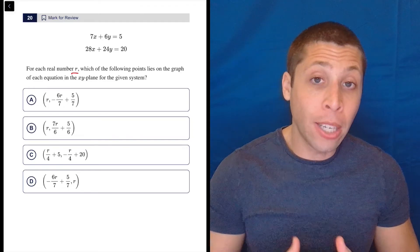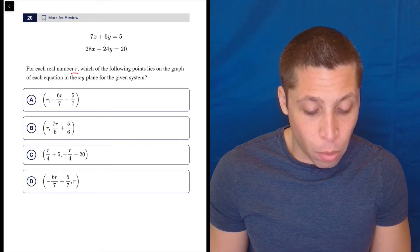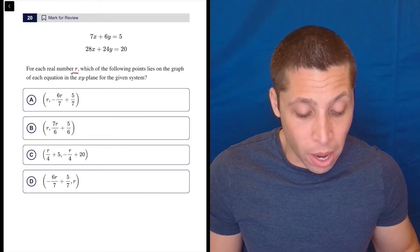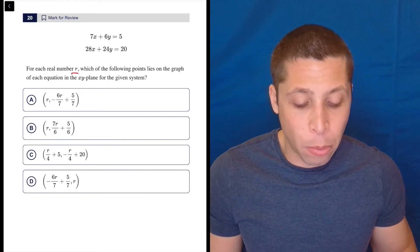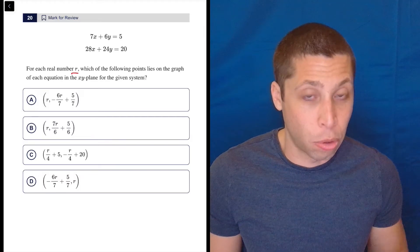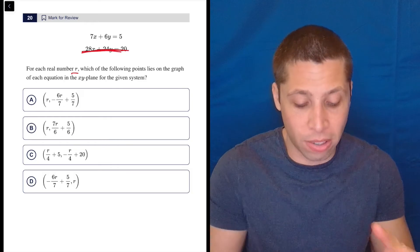Now, like all the other versions of this question that I've seen, they're giving you information you don't need. 28X plus 24Y equals 20 is the same equation as 7X plus 6Y equals 5. Just multiply the top equation by 4. What do you get? 7 times 4 is 28, 6 times 4 is 24, 5 times 4 is 20. So I'm going to ignore this bottom equation. It doesn't matter. The system of equations is the same equation twice.